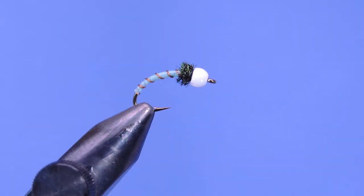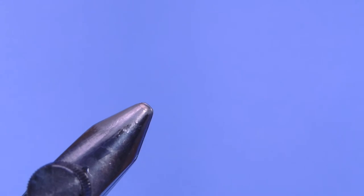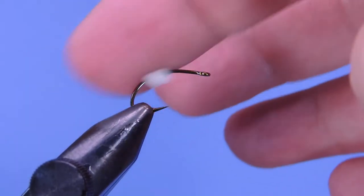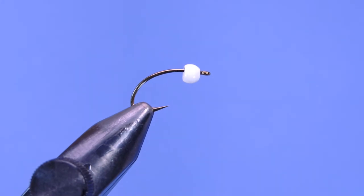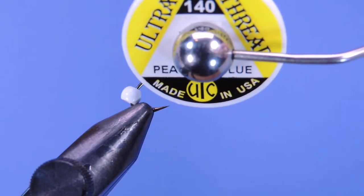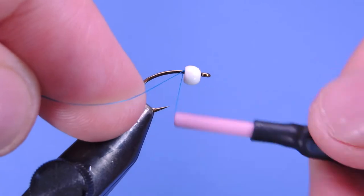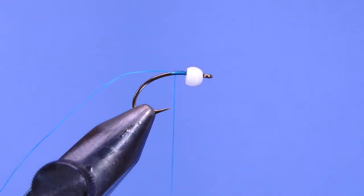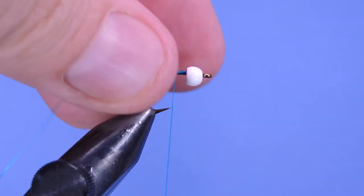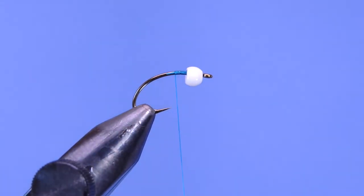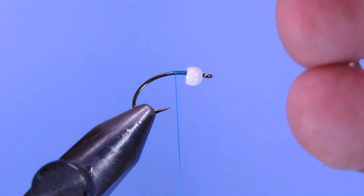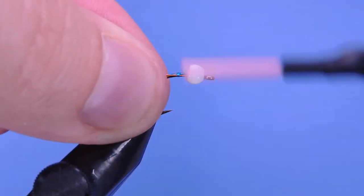All right, let's get a fresh hook in the vise. I'm going to use a Mustad Signature C49S, and the bead I'm using is just a pure white bead. We're going to be using a peacock blue ultra thread, and this is a 140 denier. We'll just start by putting a little bit of thread right behind the bead, not going to take it all the way here yet. And then the first thing we're going to tie on is a little bit of fine copper wire. We're just going to snug that under the bead here, a couple wraps.